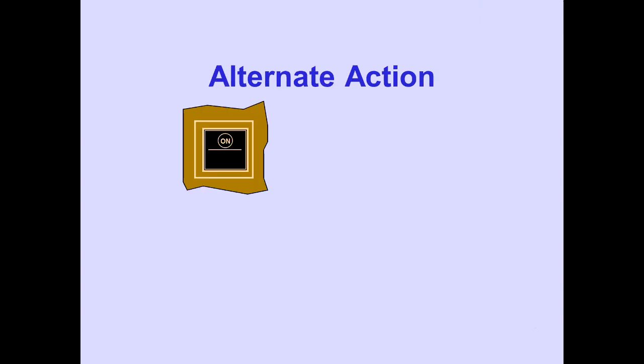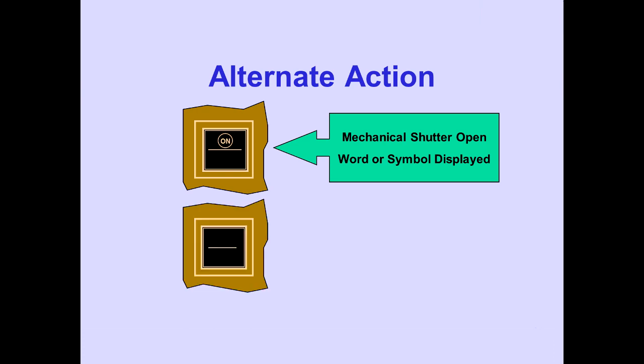Alternate action switches use a mechanical shutter to display switch position. When the switch is in or on, the mechanical shutter opens and a word or symbol is displayed. When the switch is in the off or out position, the mechanical shutter closes, covering the word or symbol.